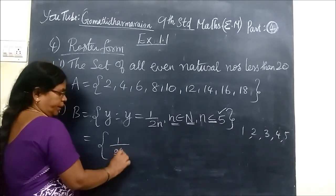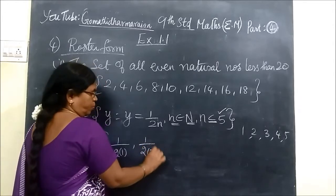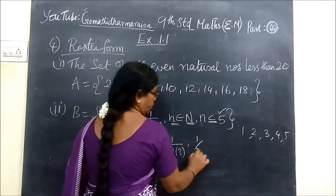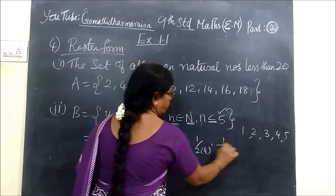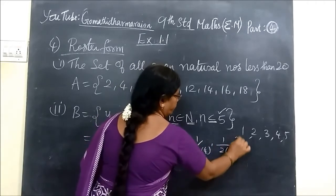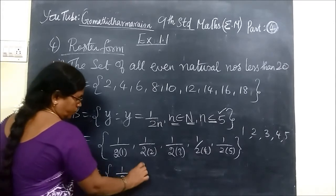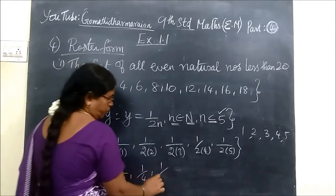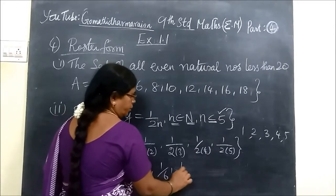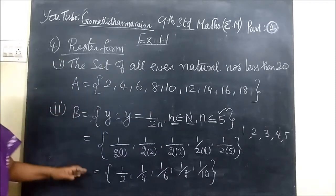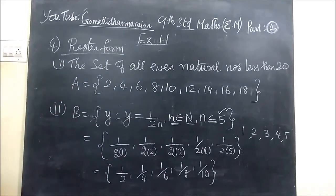So 1 by 2 bracket 1, 1. Then 1 by 2 bracket 2, then 3, 4, 5. So the answer for this: 1 by 2, 1 by 4, 1 by 6, 1 by 8, 1 by 10. And this is the roster form.